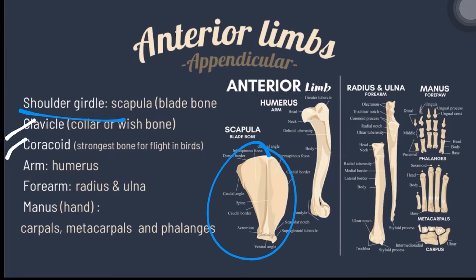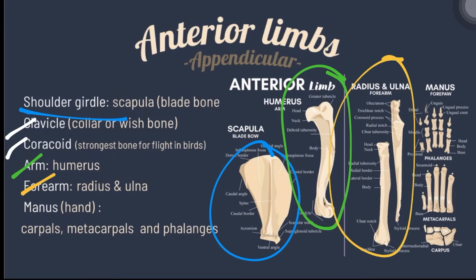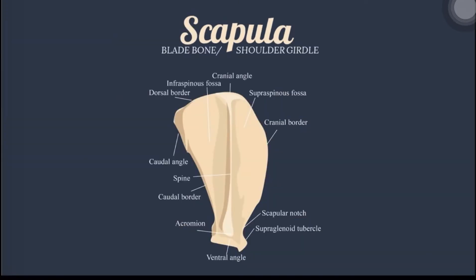The coracoid is the strongest bone for flight in birds. The arm or the humerus, and the forearm or the radius and ulna. For the manus or hand, it is comprised of the carpals, metacarpals, and phalanges. The scapula, or shoulder blade in all animals, is a relatively flat triangular bone.